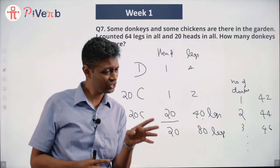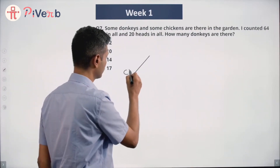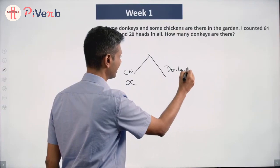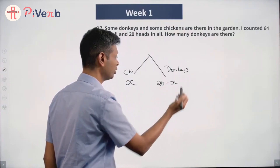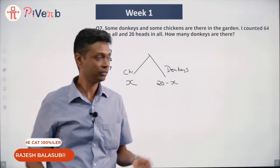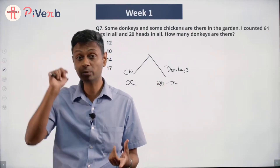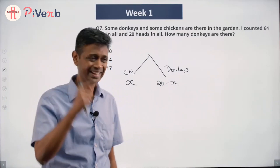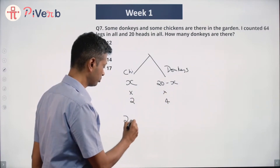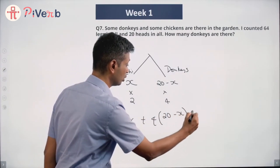I want you to think in terms of: if I take away a chicken and bring in a donkey, what happens? Now the algebraic way: let the number of chickens be x and the number of donkeys be 20 minus x, since there are 20 animals total. Each chicken has two legs, each donkey four legs. So: 2 times x plus 4 times (20 minus x) equals 64.